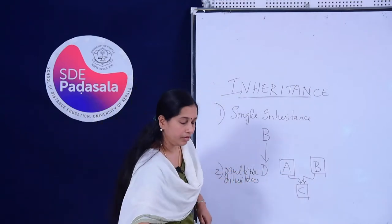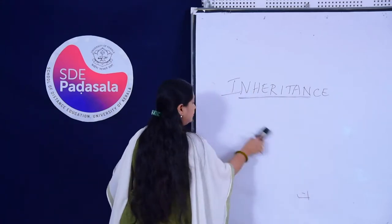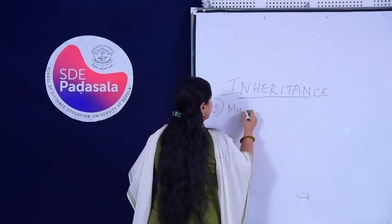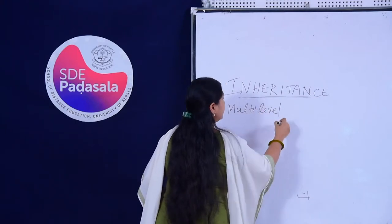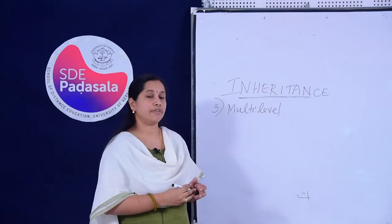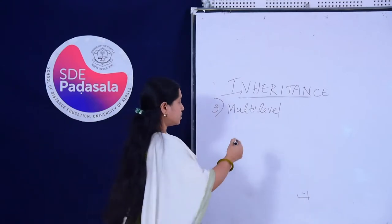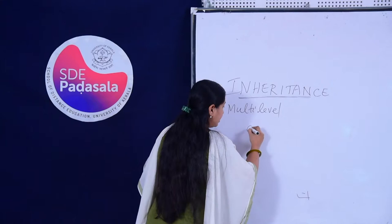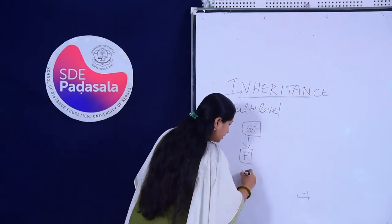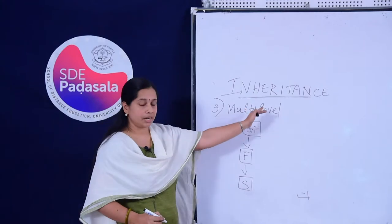The third type is multi-level inheritance. As the name suggests, it is inheritance at different levels. Like a father might have got characteristics from a grandfather and passed them to his child. So the grandfather gives characteristics to the father and the father gives his characteristics to the son. Inheritance going to different levels is called multi-level inheritance.